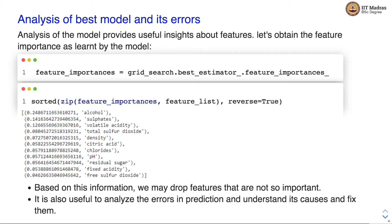Machine learning model development is an iterative process. We start with some feature set, train the model, perform the hyperparameter search, and then analyze the model. We understand the feature importance and look at the errors in the model. Based on the errors, we go back to the domain experts, consult them, and find out how to take care of those errors. In order to address the errors, we might need a new set of features or some kind of feature transformation of the existing features. We perform that and retrain the model, and this process continues until we get a model of satisfactory quality.